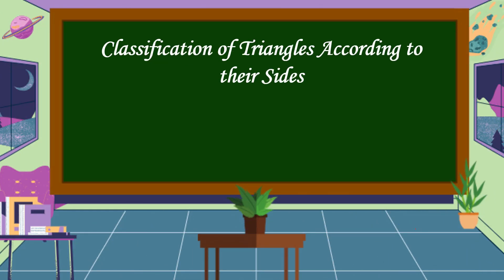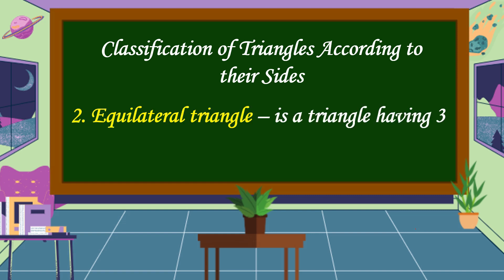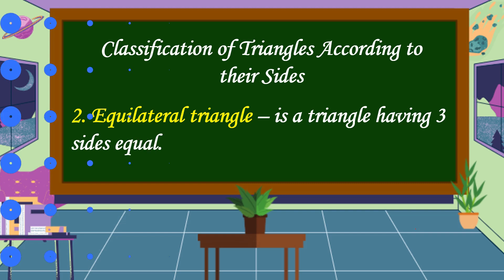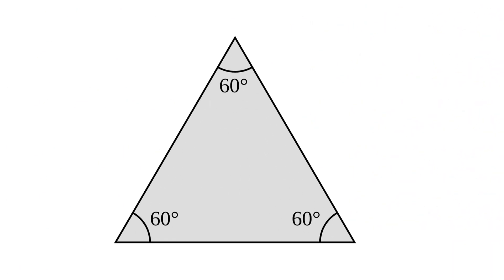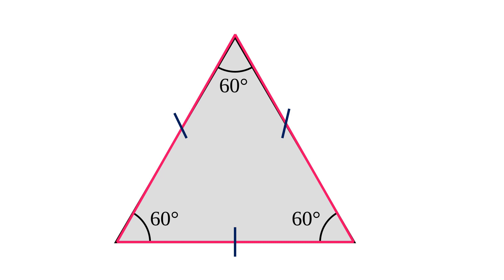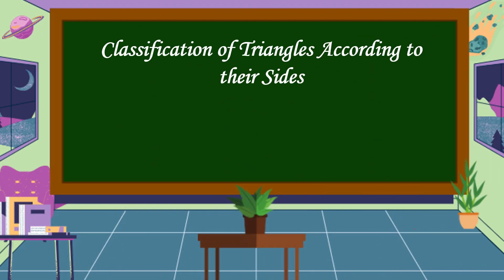The second classification of triangles according to their sides is an equilateral triangle. An equilateral triangle is a triangle having three sides equal. This is an example of an equilateral triangle — all sides are equal in length. The third classification according to their sides is a scalene triangle.